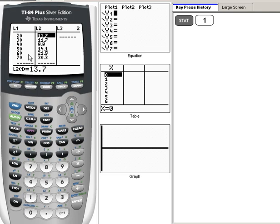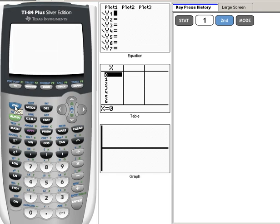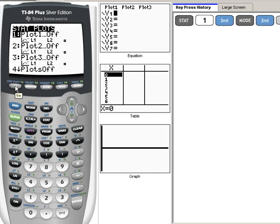Once you've put the ages and the percentages in, we're going to do 2nd mode to quit, 2nd Y equals to get to our stat plot menu. We're going to choose number 1, or just hit enter.